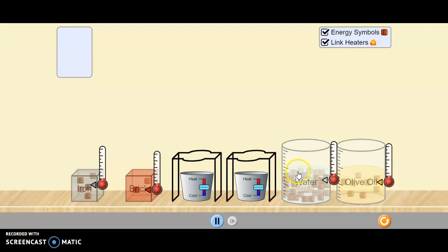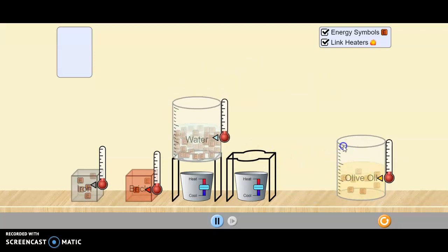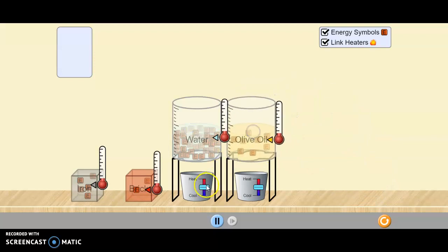So some of the things you can do with this simulation to get started is let's take the water and the olive oil and let's heat them both up. And as we begin to heat, we notice some things happening with the energy symbols. There seems to be some movement and we also notice the temperature, the thermometer, rising.